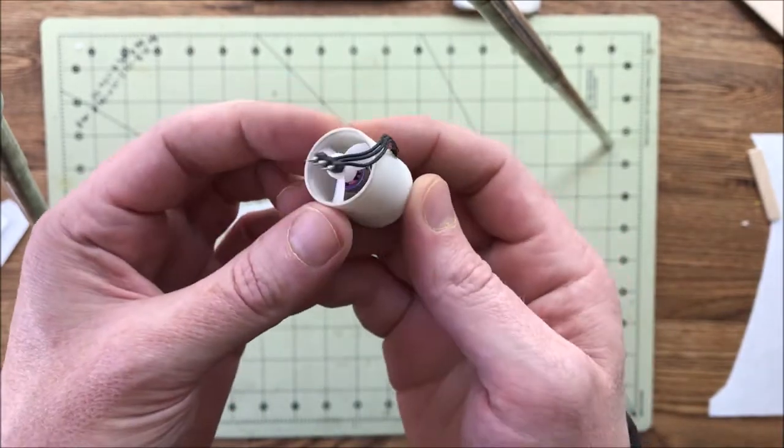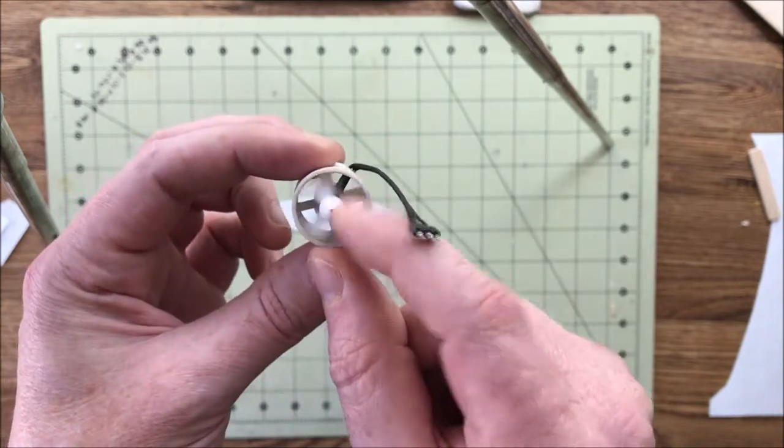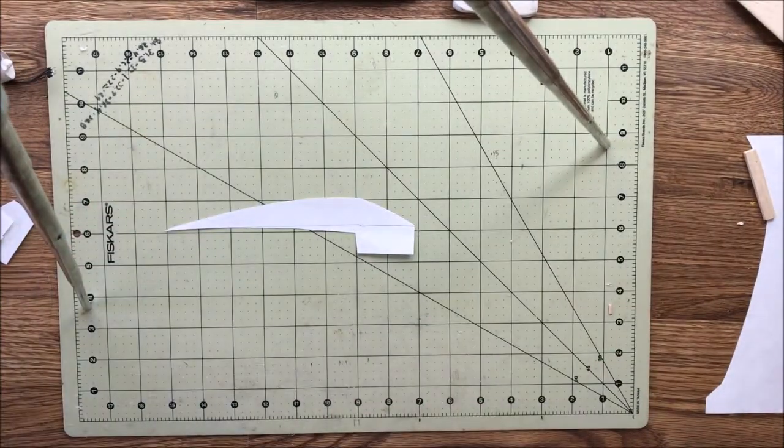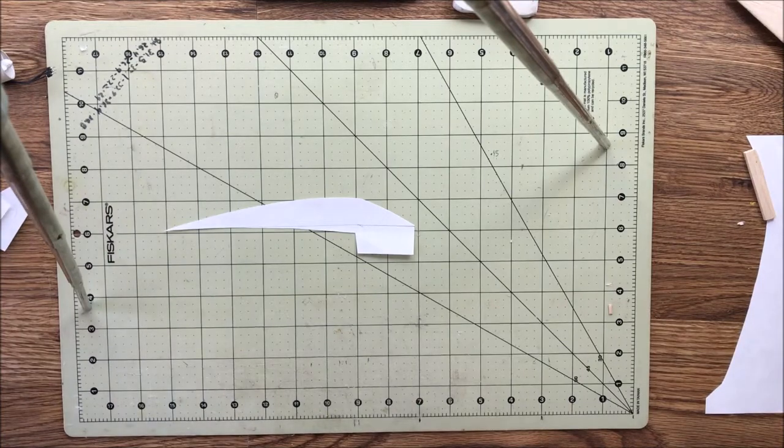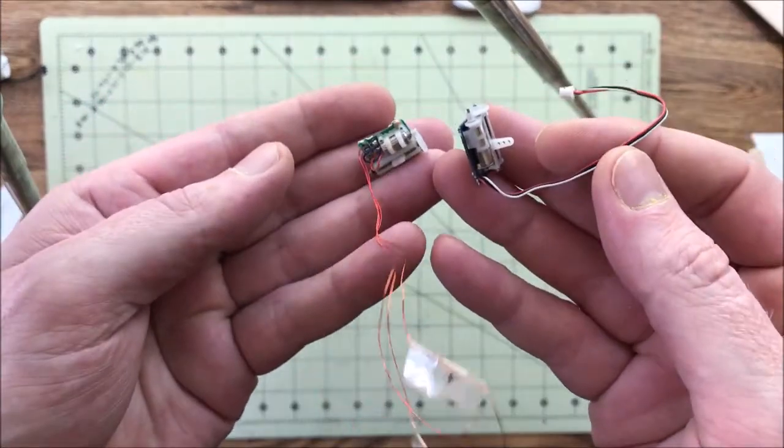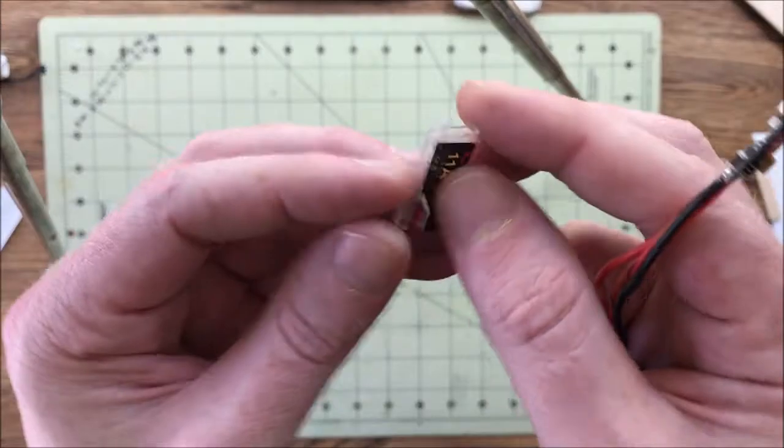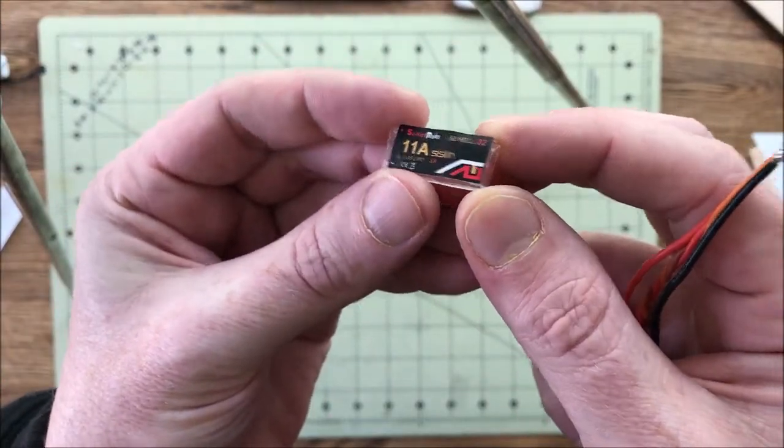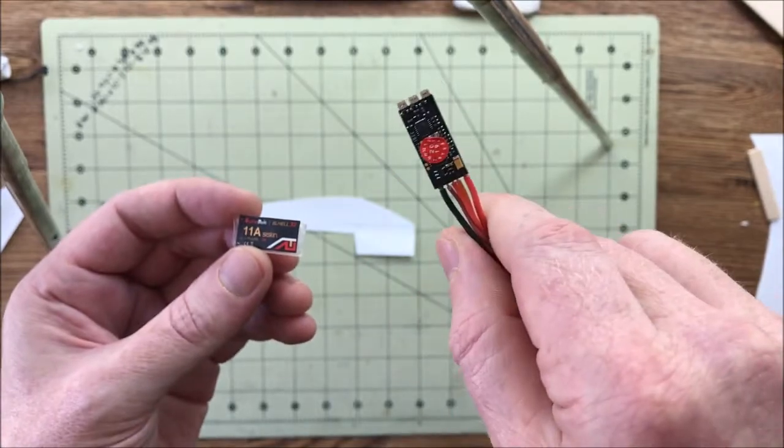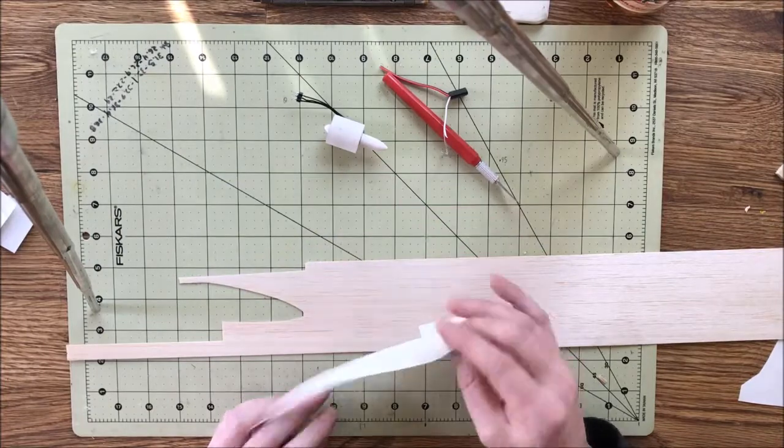It does about 27 grams of thrust on 3 amps on 2 cells. I'll be using one of these little 2.4 gigahertz receivers, a couple linear micro servos, a 2 cell brushless speed controller, and a 2 cell 160 milliamp pack.